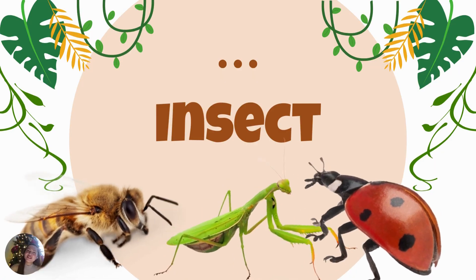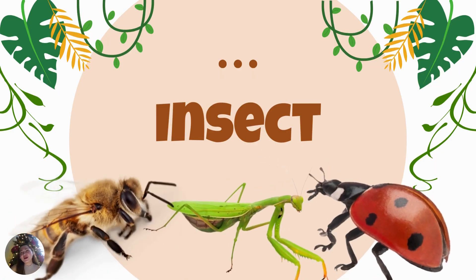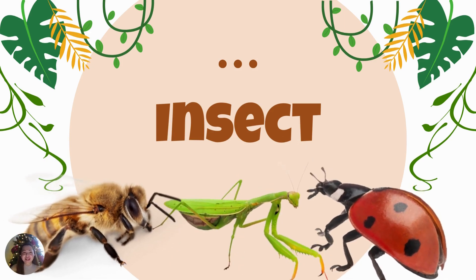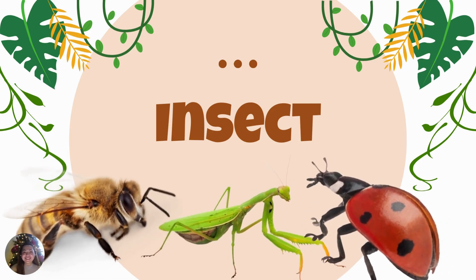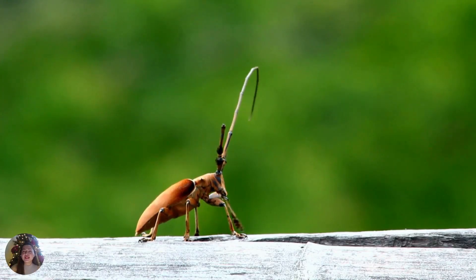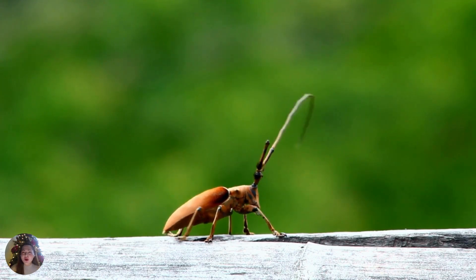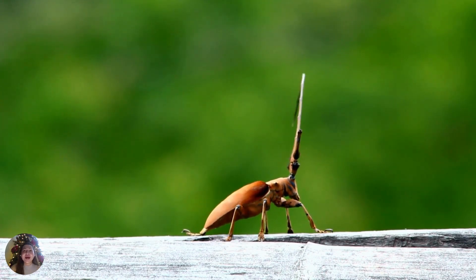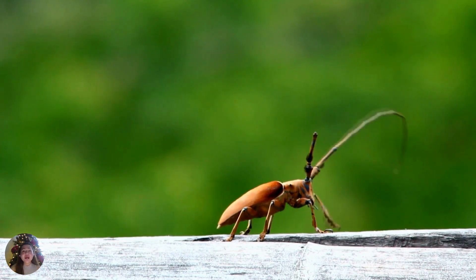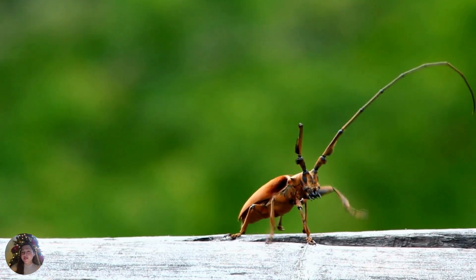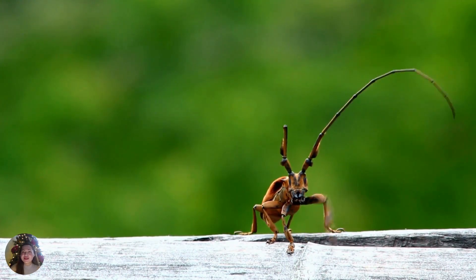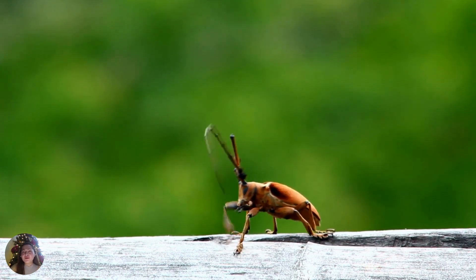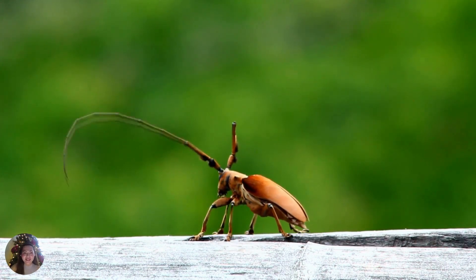Alright, let us first examine the parts of the insect and how they use them. Are you excited? Let's go! The animal in the video is an insect. An insect has three main parts: the head, the thorax, and the abdomen. Let me show you a more detailed picture in the next slide.